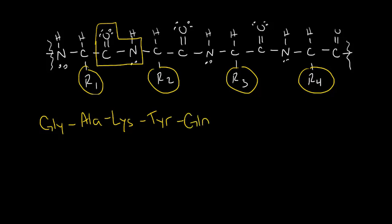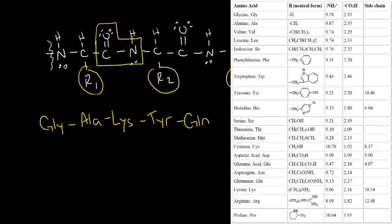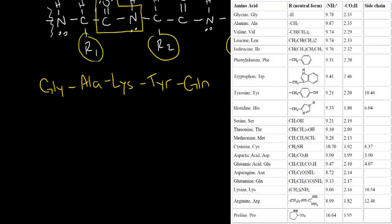We've seen the table of amino acid side chains before, so we can use that table to allow us to figure out what each of these amino acids contribute to the peptide. For example, glycine has a side chain of just a hydrogen.